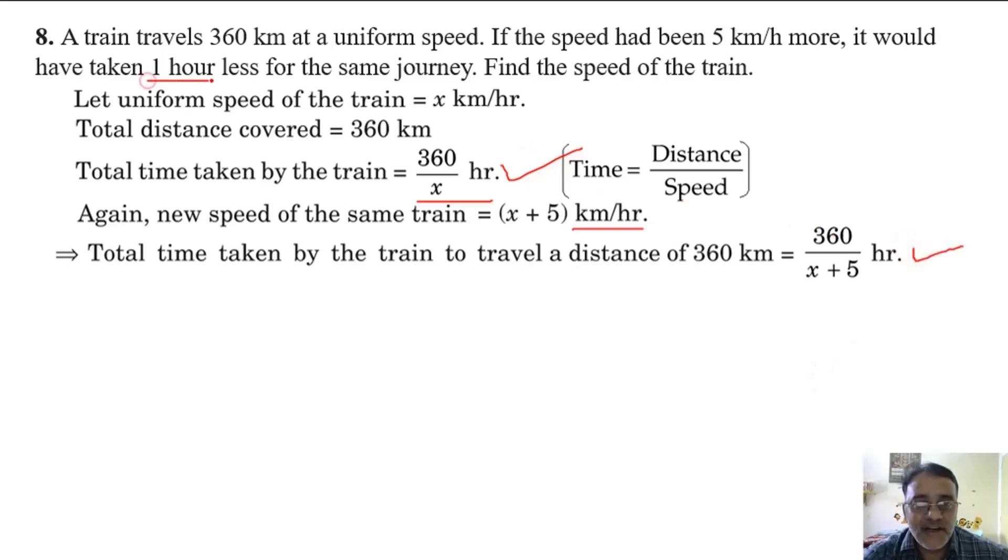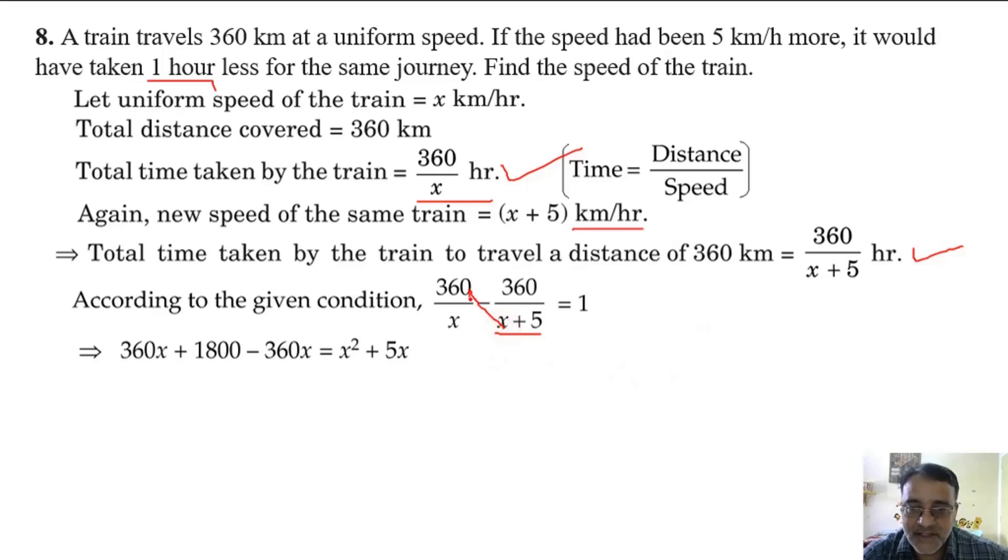According to the given condition, 360/x - 360/(x+5) = 1. Taking 360 common, we get 360x + 1800 - 360x = x² + 5x.